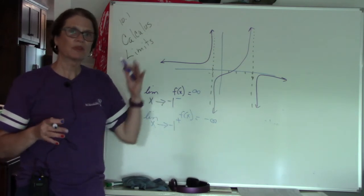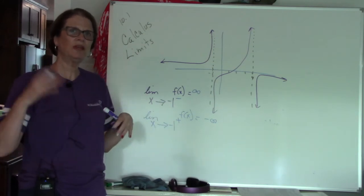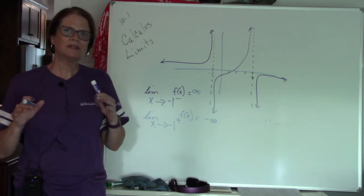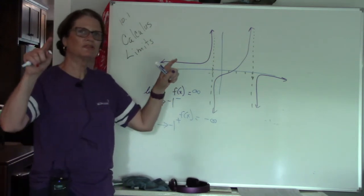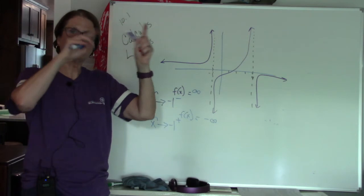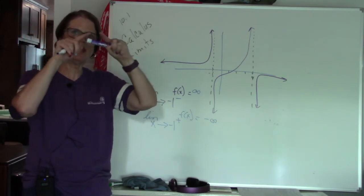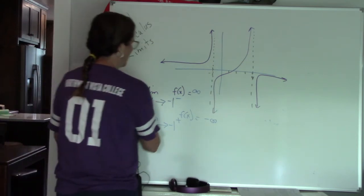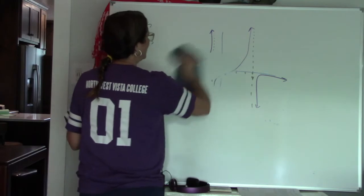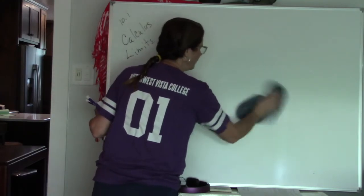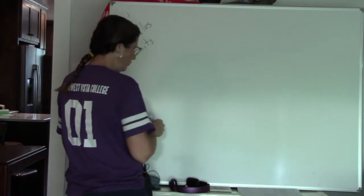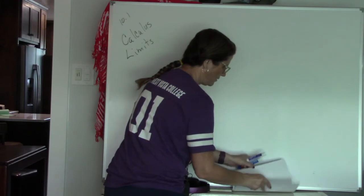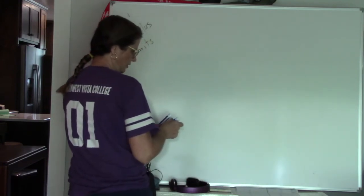So you have right-hand limits and left-hand limits — they can be two different things. The right-hand limit can approach one place, and the left-hand limit can approach another. The only time a limit exists is if I can approach from both sides and they agree. In this business calculus class, we're not going to deal with infinite or negative infinity values because we're looking at a very specific aspect of calculus.